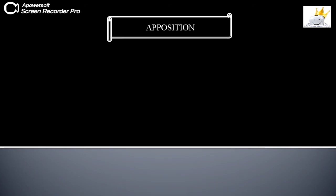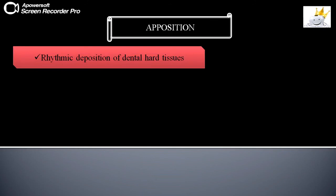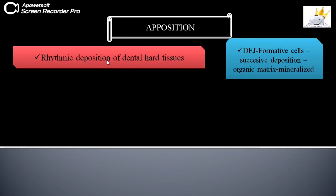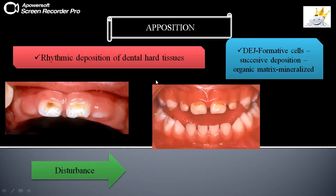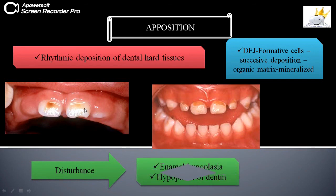The last stage is apposition. It is a process involving the rhythmic deposition of dental hard tissues — enamel, dentin, and cementum. At the primary dentition, enamel and dentin are rhythmically deposited. Once the dentino-enamel junction is formed, the formative cells — ameloblasts and odontoblasts — begin successive deposition of organic matrix, which gets mineralized to form the dental hard tissues. Any defect, whether local or systemic, leads to hypoplasia of enamel and hypoplasia of dentin.